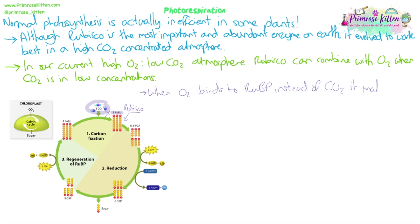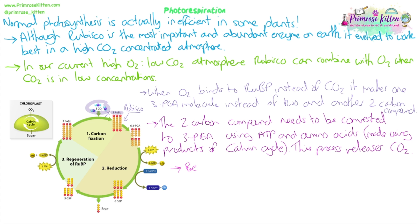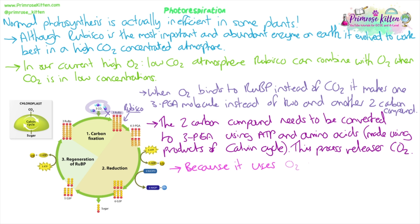The amino acids would have been made using the products of the Calvin cycle — using TP or GALP, converted into amino acids by adding some nitrogen. So we've used up energy and products of the Calvin cycle to do this. It also releases carbon dioxide, but it allows that 3-PGA to go back into the cycle. Because the whole process uses oxygen instead of carbon dioxide and produces carbon dioxide through the conversion of that two-carbon compound, it's known as photorespiration.